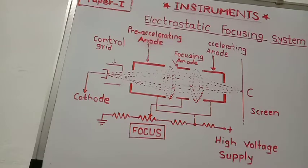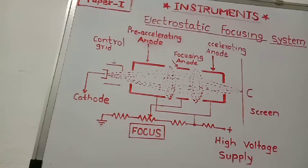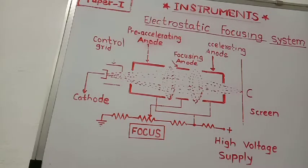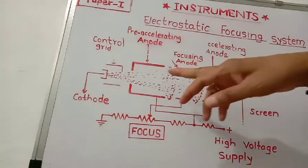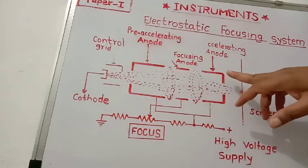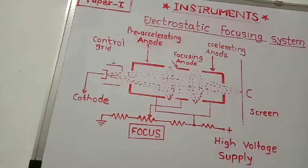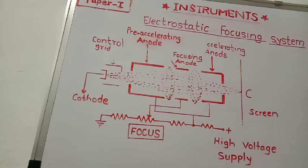In a cathode ray oscilloscope there is one section called the electron gun. This electron gun consists of a filament, cathode, control grid, pre-accelerating anode, focusing anode, and accelerating anode. These are the electrodes in the electron gun assembly in the CRT.